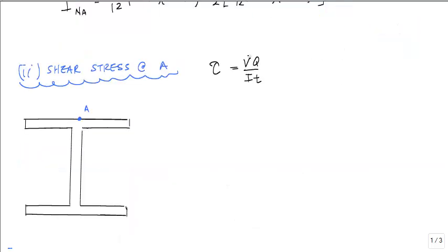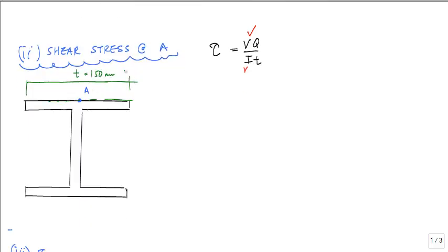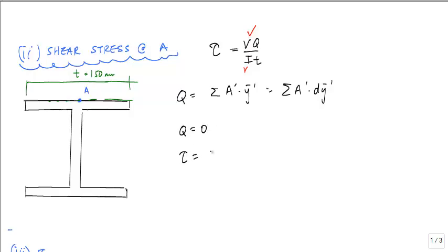To calculate the shear stress at point A, we know V is 50 kilonewtons, we know I, and the width T at that location would be the entire width — 150 millimeters. The key thing to find is Q, the first moment of area about the neutral axis, written as the sum of A prime times Y bar prime. You take the area either all above or all below the location of interest. At point A, the area above is zero, so Q is 0, and therefore tau is 0. The shear stress at point A is zero.